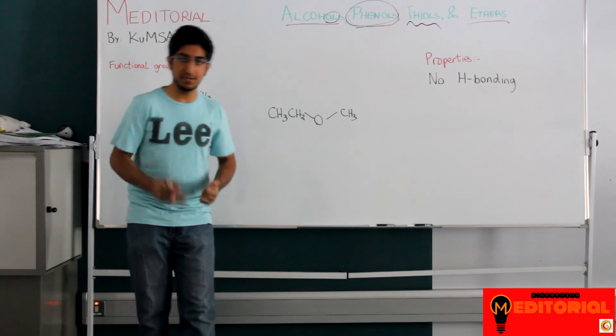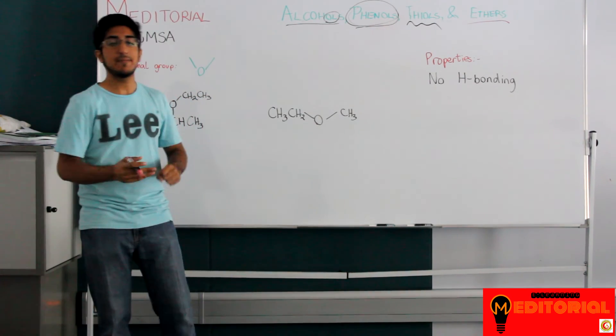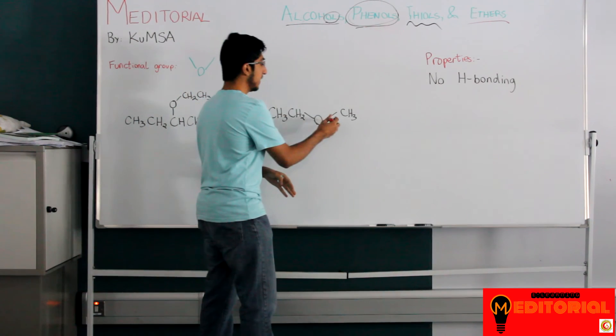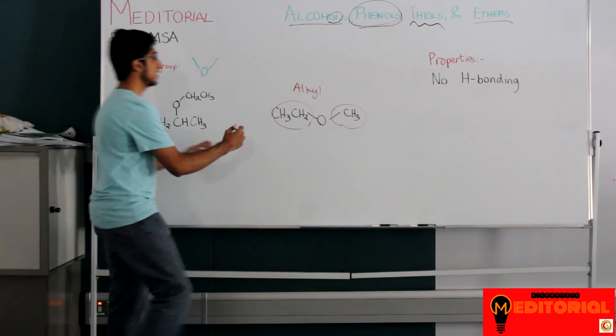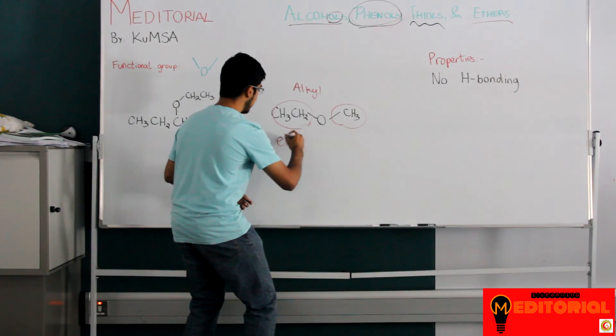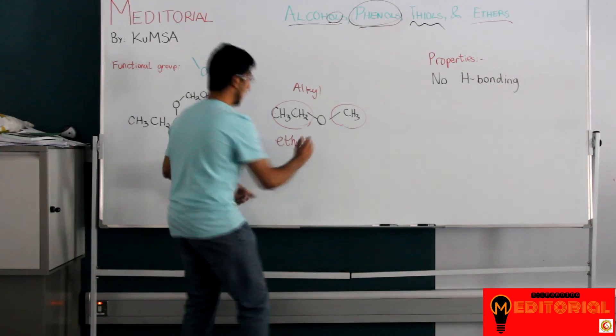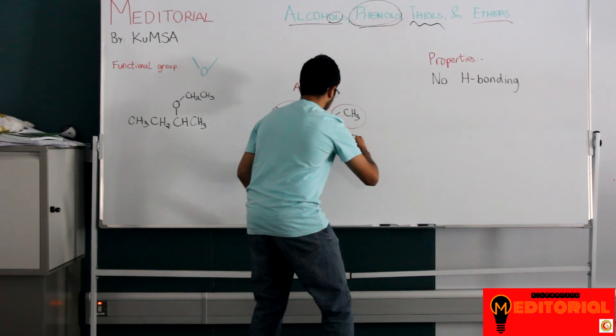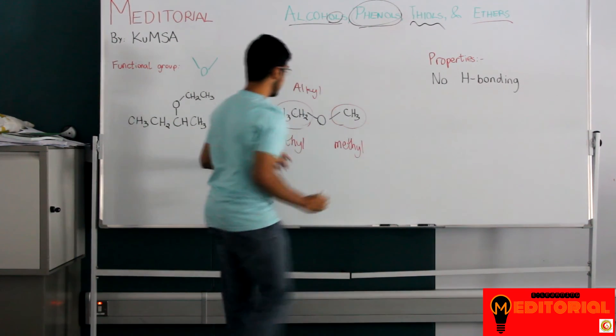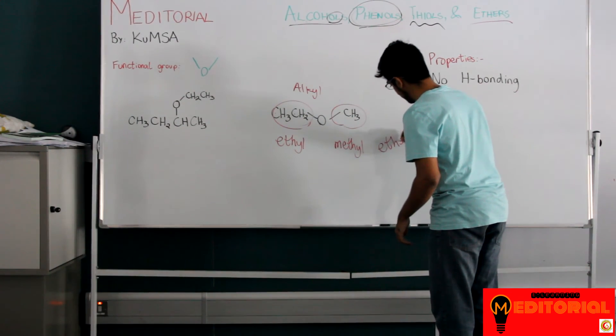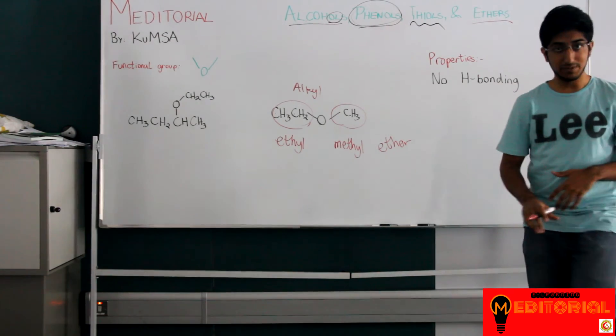So naming ethers is actually really simple. All you have to do is imagine them as, there's two ways to name them. You can either name them as two separate alkyl groups. So we take the two alkyl groups. This is an ethyl because it's one, two carbons. So ethyl. And this is a methyl. It's only one carbon. So this is methyl. So we have ethyl methyl ether. That's one way of naming it.